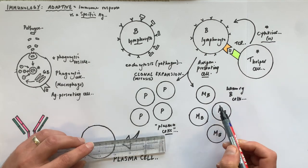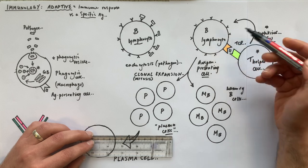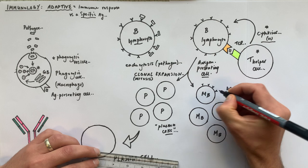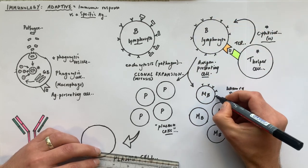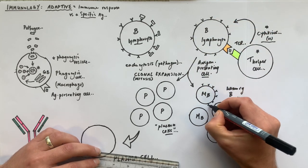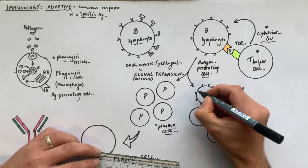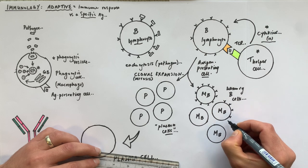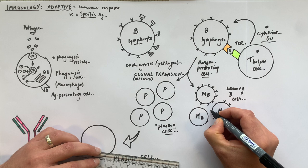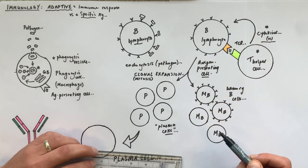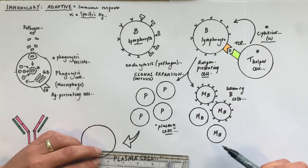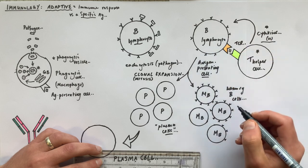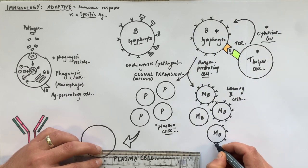The memory B cells, which are genetically identical clones of the original B lymphocyte, will make exactly the same antibody as was on the cell membrane of the original B lymphocyte and incorporate these antibodies into their cell membrane. After this initial clonal expansion we end up with thousands of memory B cells, all with the same specificity as the original single B lymphocyte.